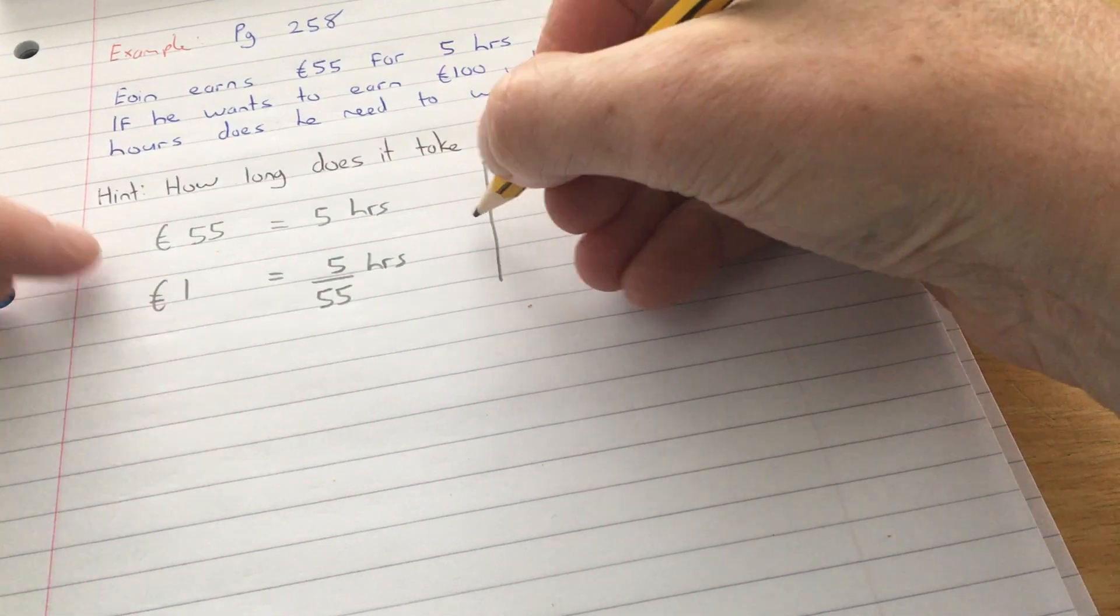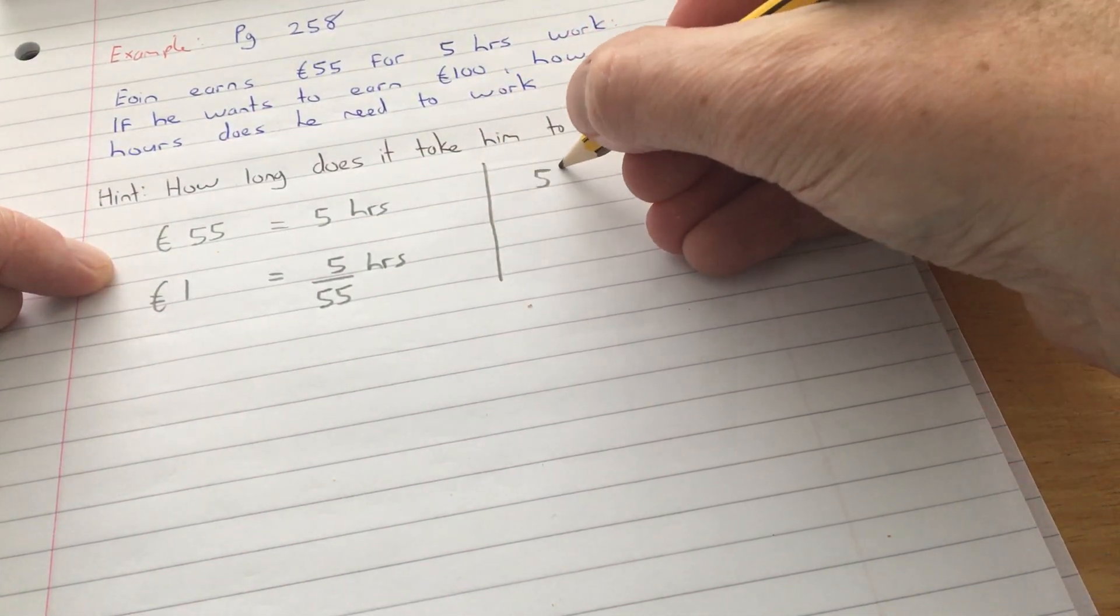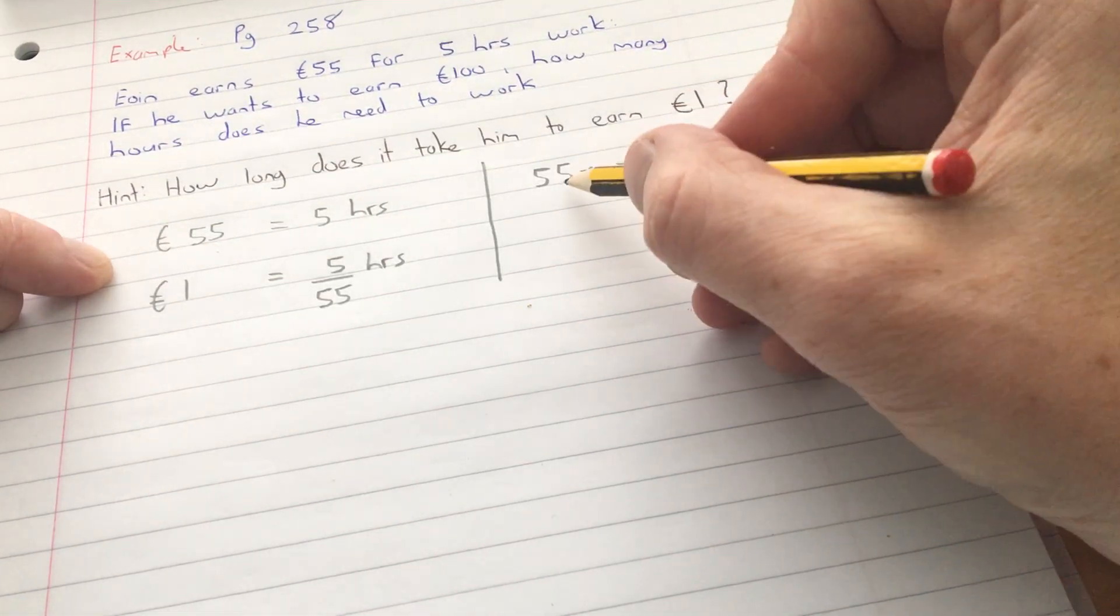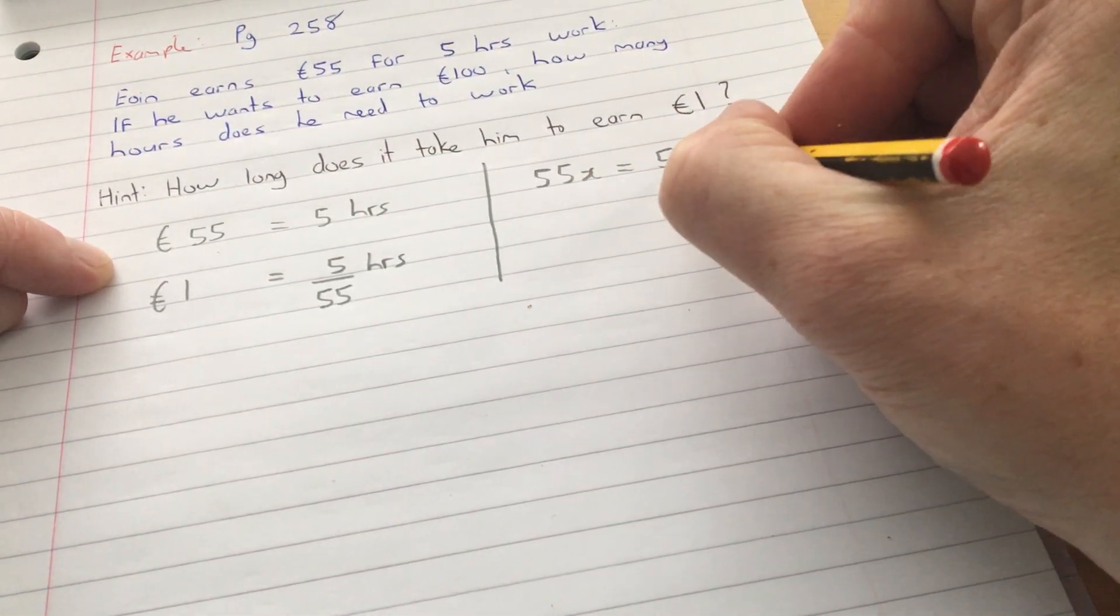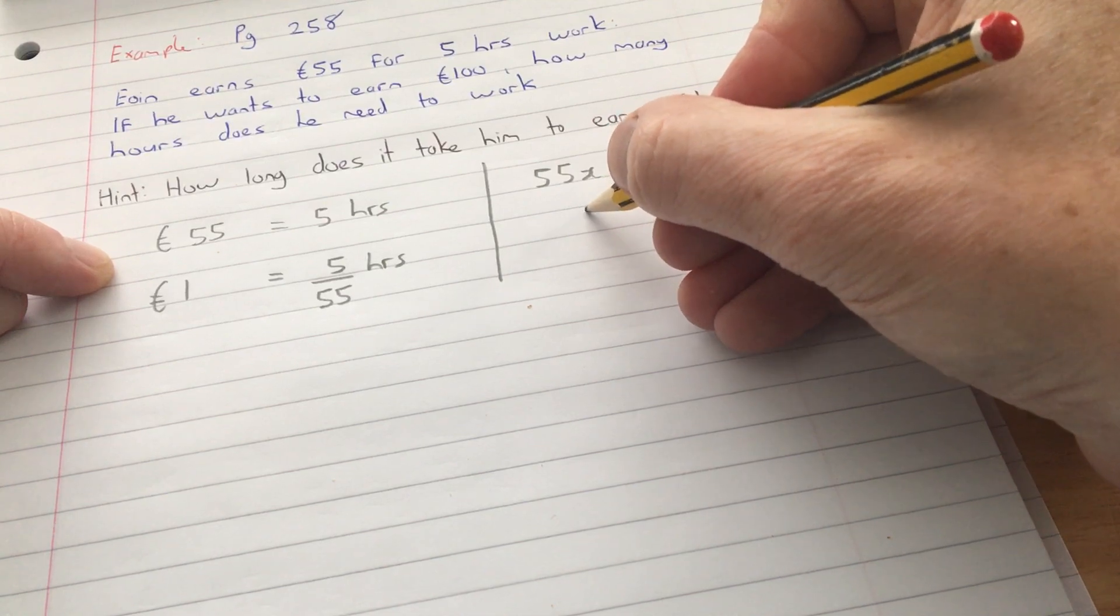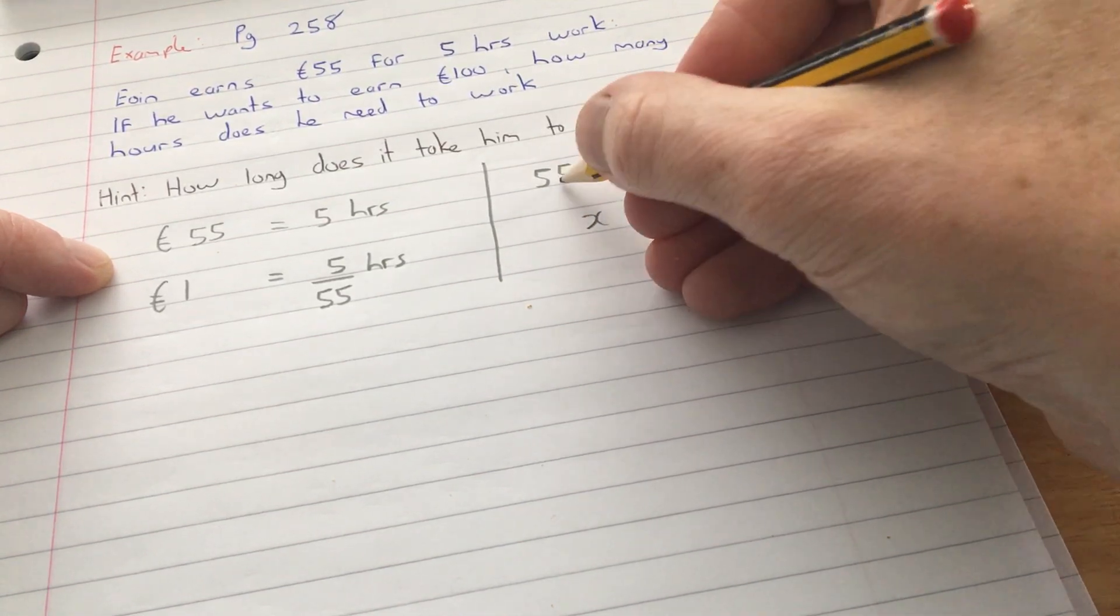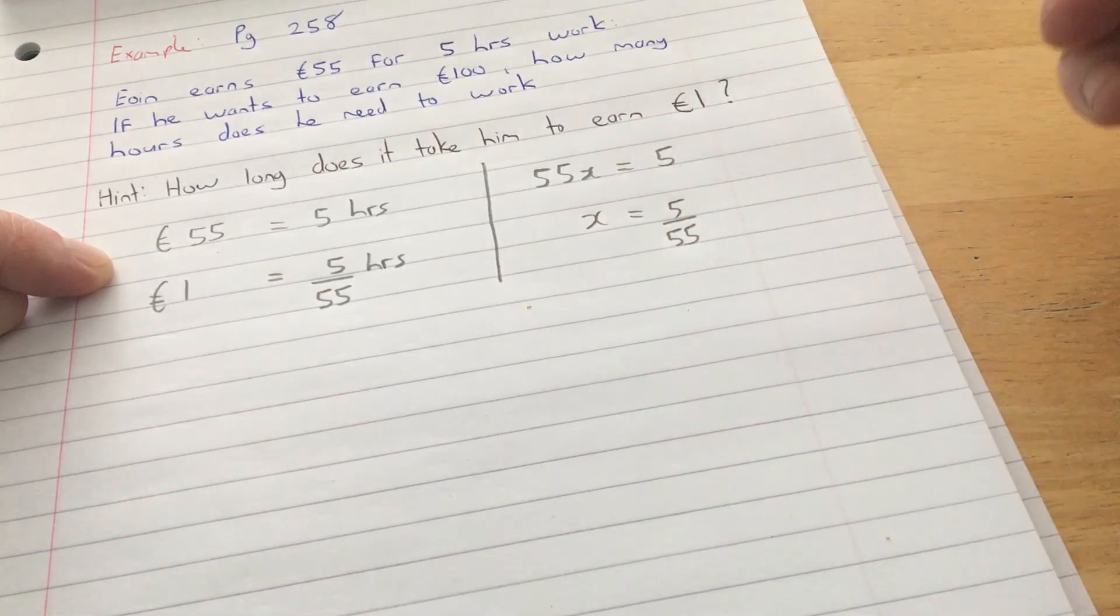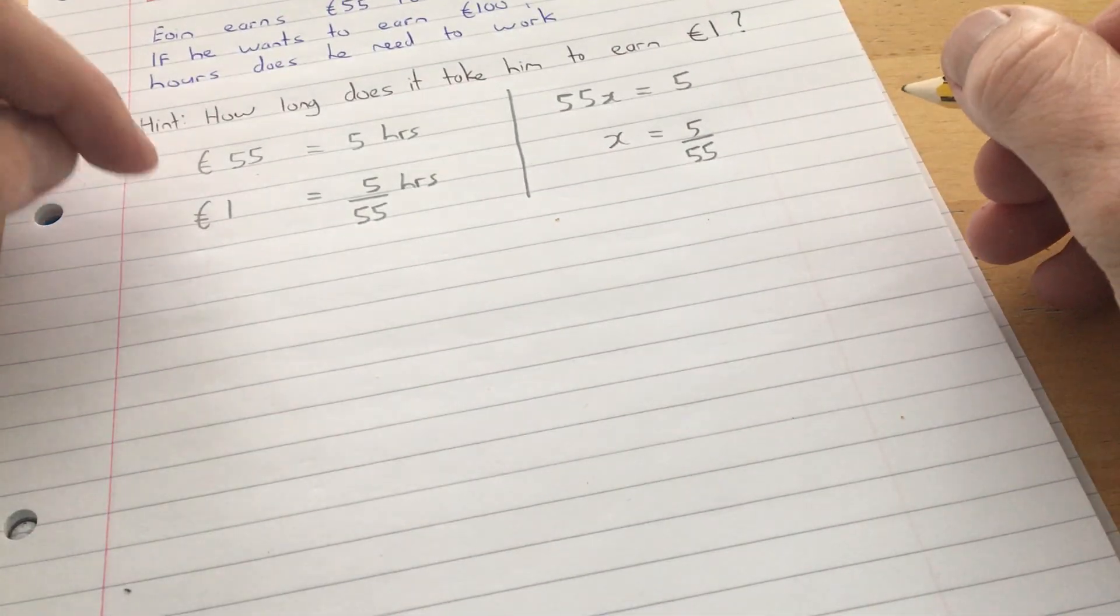Now think of this as if I said to you 55x equals 5. Do you remember when we were doing our equations? If 55 somethings equals 5, then remember what we do with the 55? If it's multiplied on the left, we divide it on the right. It's exactly the same thing here, even though it's euro and hours.